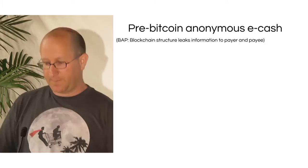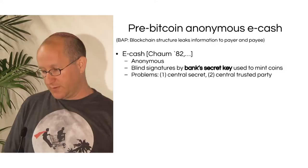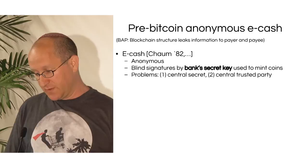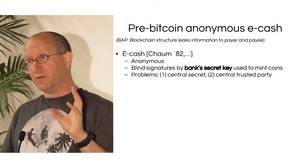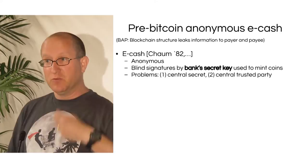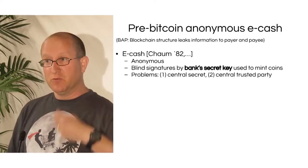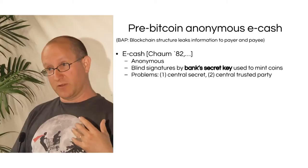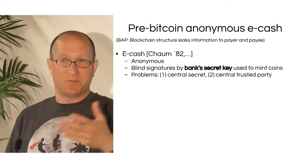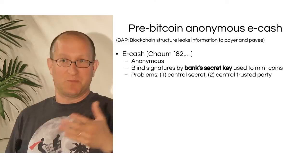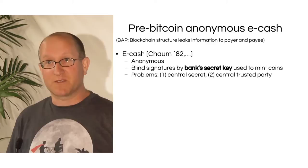Pre-Bitcoin, we already had some wonderful suggestions for anonymous e-cash systems. The first was by David Chaum, called eCash — it was anonymous and used a new concept called blind signatures. It required a bank, a central trusted party, which used a secret key to mint coins. Users could spend them, and the bank would keep track of accounts, deducting from your balance whenever you were minted a coin. The problems: you need a central secret and a central trusted party, which goes against the grain of Bitcoin.